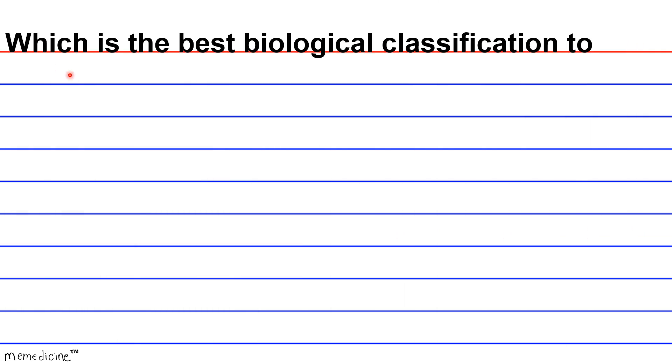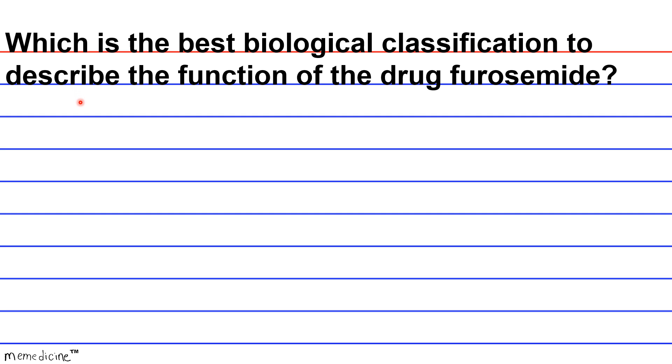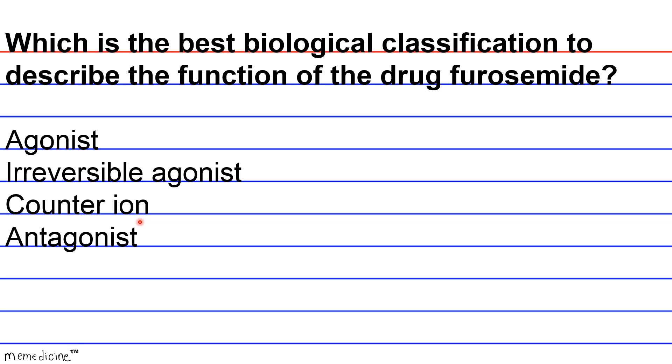Which is the best biological classification to describe the function of the drug furosemide? Is it A, agonist? B, irreversible agonist? C, counter ion? Or D, antagonist? I'll give you a moment to think.